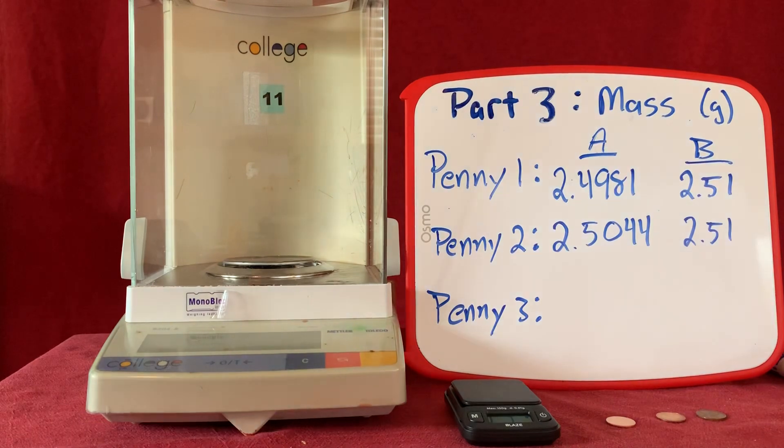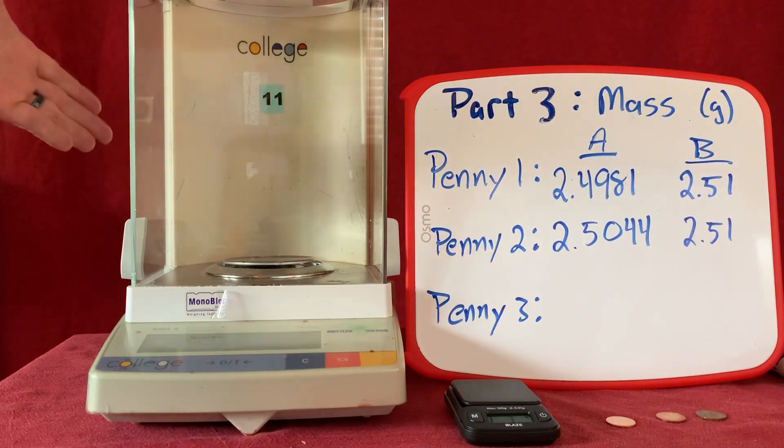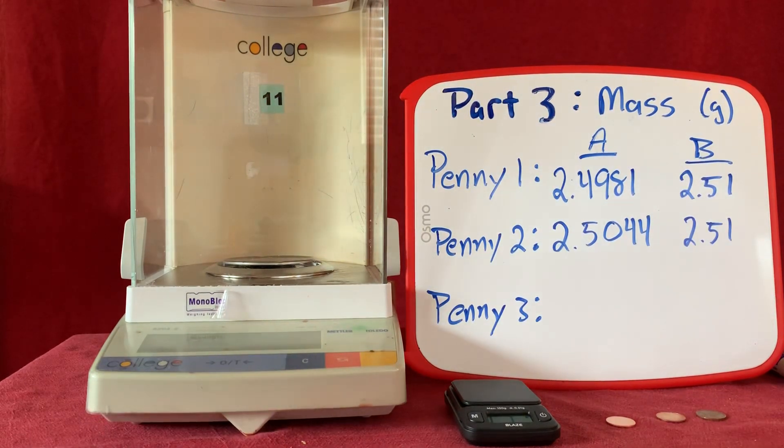We also got two different balances. We have a Mettler-Toledo balance, very commonly found in college chemistry labs, and also have a Blaze balance down here from a home chemistry kit. We'll be able to compare the precision of these two different devices.